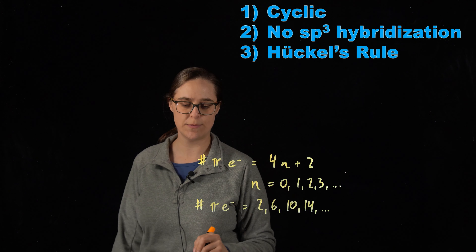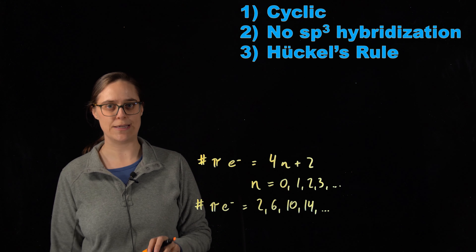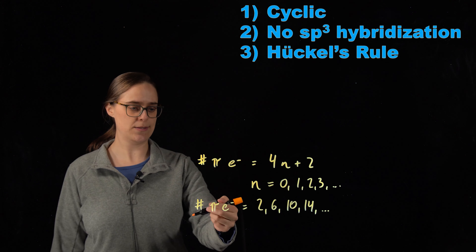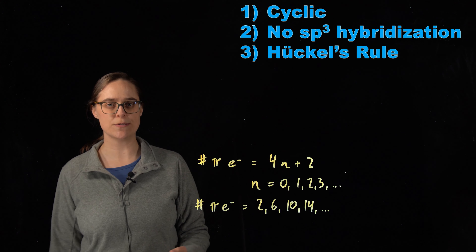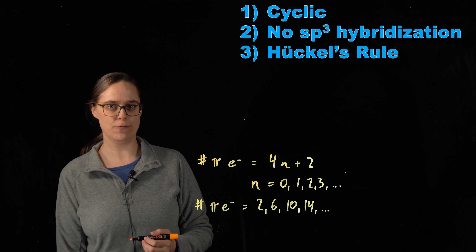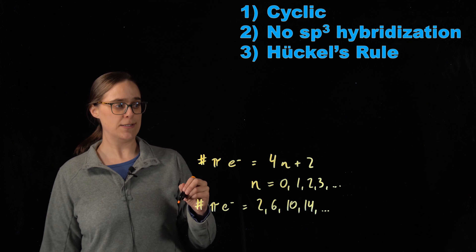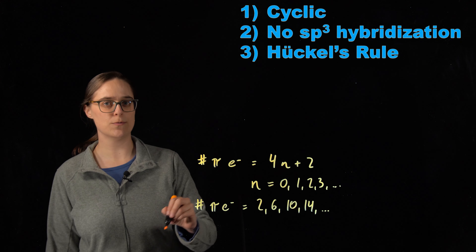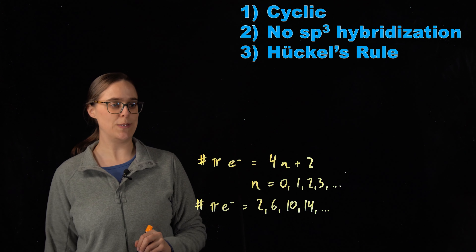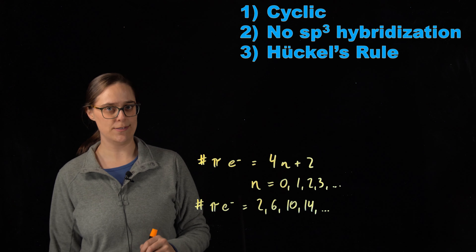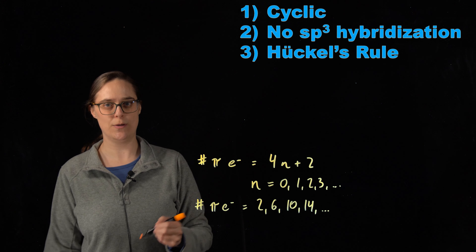Hückel's rule is a derivation of molecular orbital theory, which deals with what these pi electrons are doing — whether they're in bonding, non-bonding, or anti-bonding orbitals. The great thing about Hückel's rule is that you can decide if something is aromatic without putting all the thought into molecular orbital theory. You need to be able to identify pi electrons, count the total number of pi electrons, and see if that number equals 4n + 2, where n is an integer.